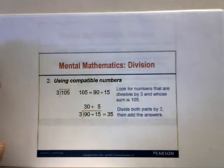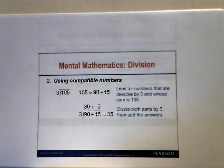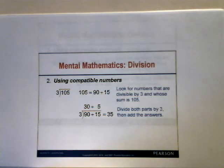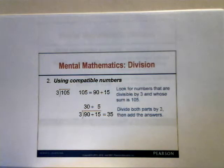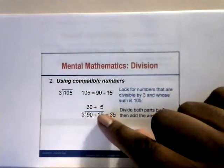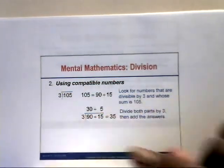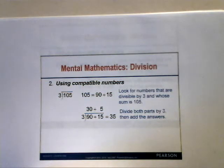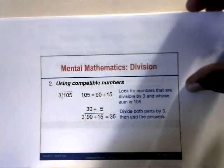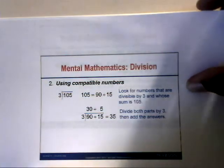The second division technique uses compatible numbers. For 105 divided by 3, find numbers divisible by 3 whose sum is 105: 90 plus 15. Divide 90 by 3 to get 30, and 15 by 3 to get 5. Then 30 plus 5 equals 35, so 105 divided by 3 is 35.